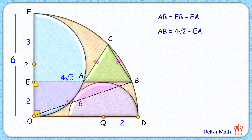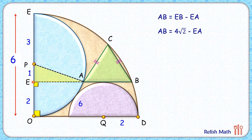Now let's remove all the construction done so far and join center P to point A. In triangle PEA, PO is three centimeters and EO is two centimeters, so PE length is one centimeter. The radius PA is three centimeters. Applying the Pythagorean theorem again, we get EA length as two root two centimeters.